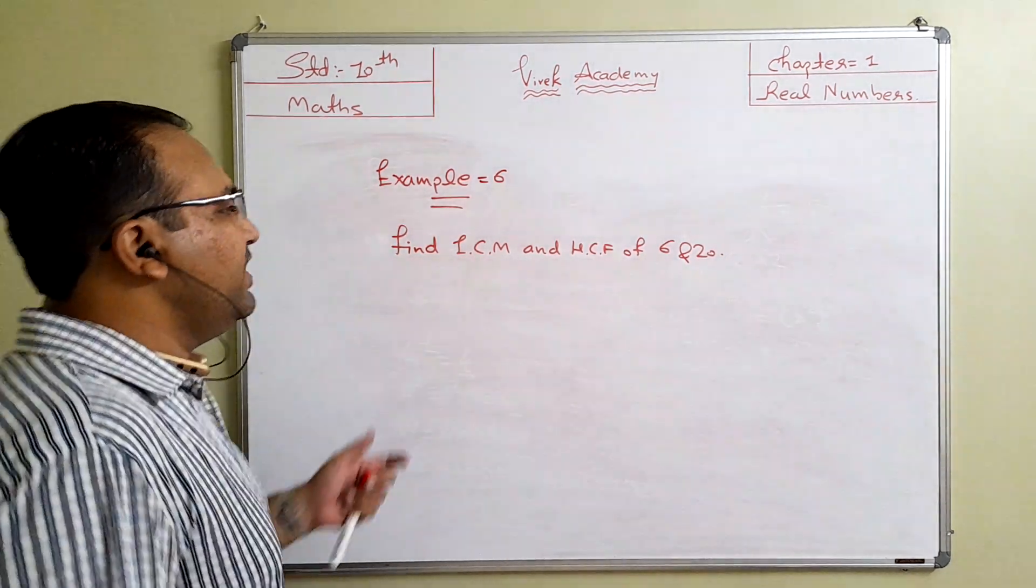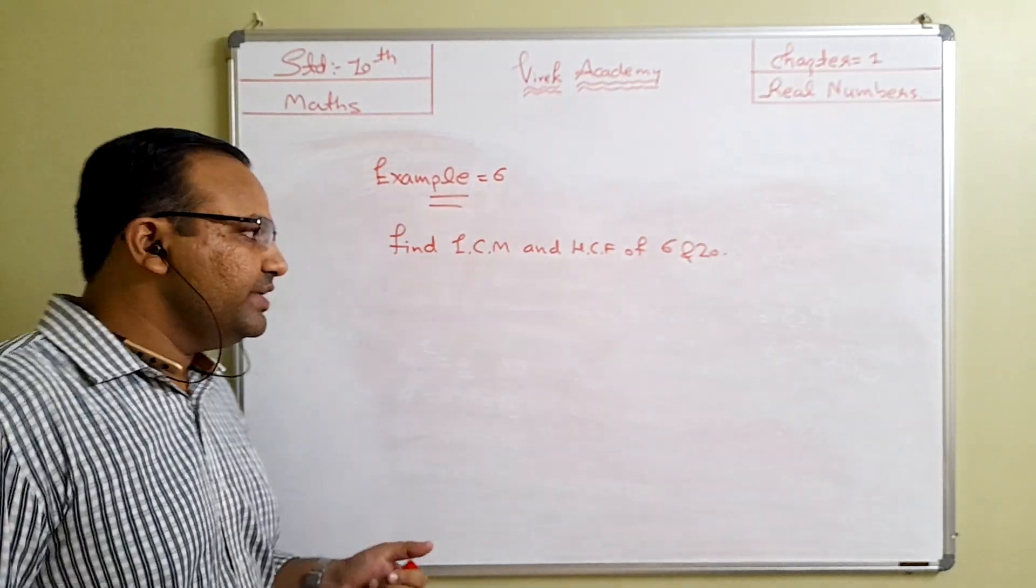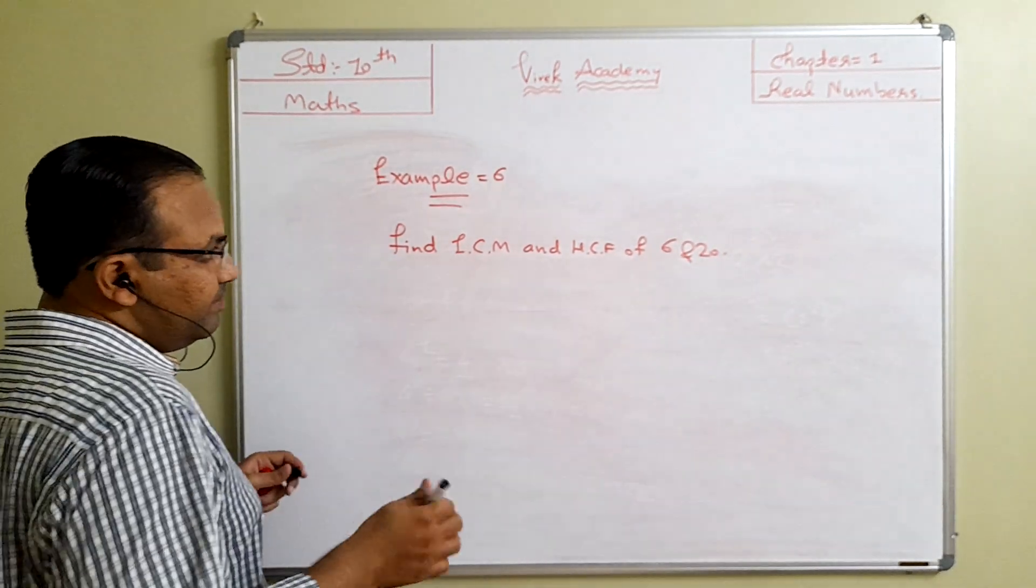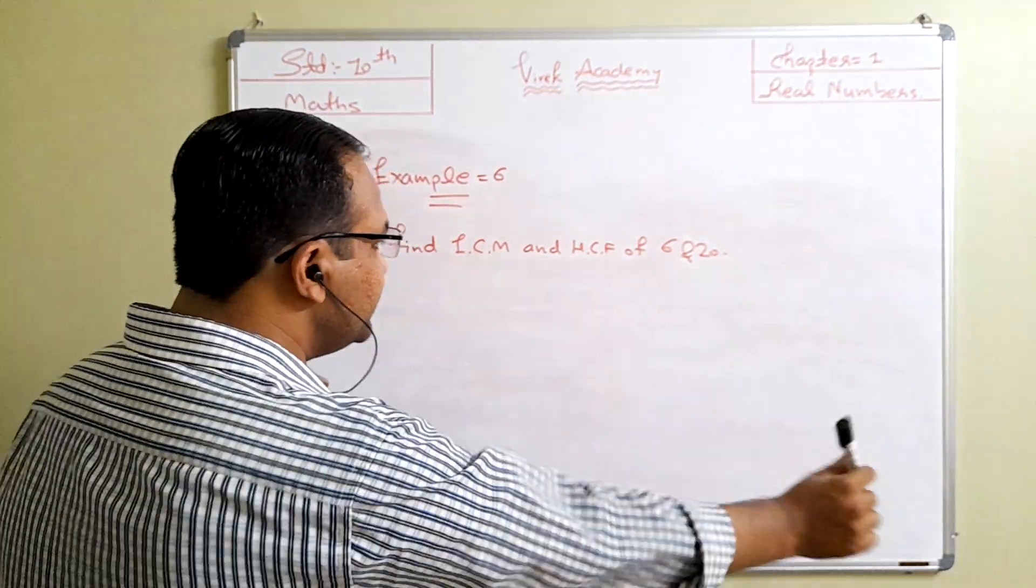Now example number 6: Find the LCM and HCM of 6 and 20 by prime factorization method.